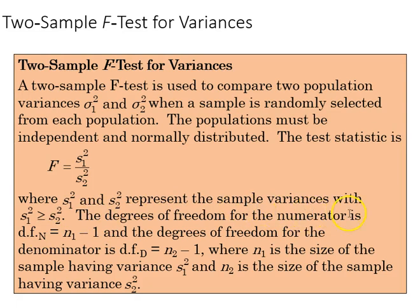The degrees of freedom for the numerator is going to be the sample size minus one for the numerator, which is our first sample, and alternatively for the denominator, the sample size for sample two minus one, and from that we can calculate our F.